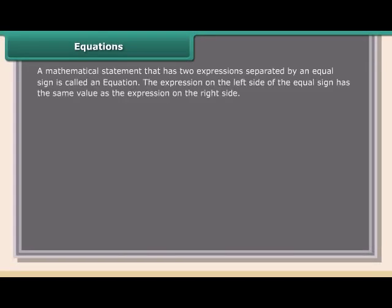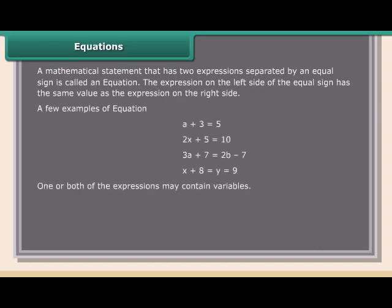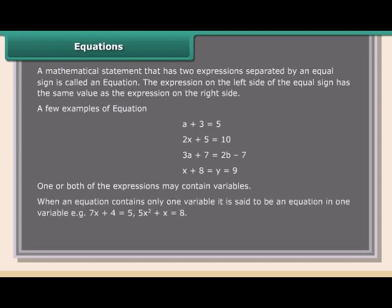A mathematical statement that has two expressions separated by an equal sign is called an equation. The expression on the left side of the equal sign has the same value as the expression on the right side. One or both of the expressions may contain variables. When an equation contains only one variable, it is said to be an equation in one variable.